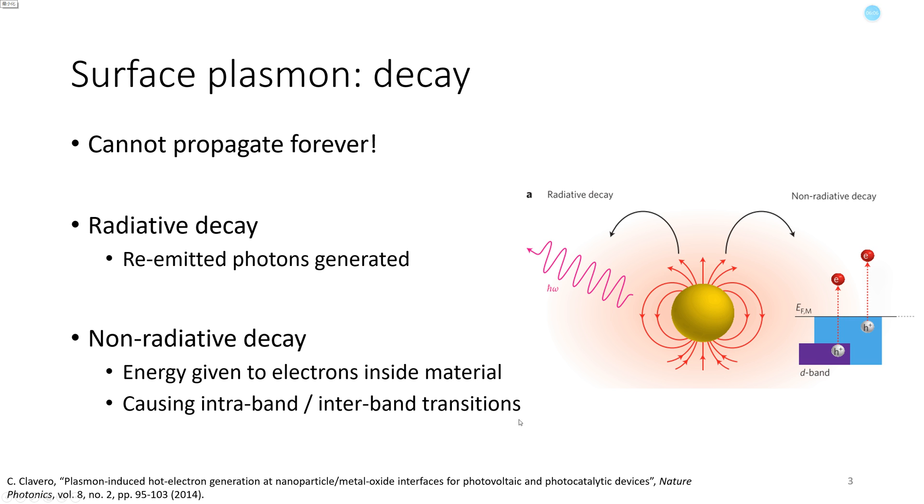One is radiative, which means that photons are regenerated and emitted. The second is non-radiative. Here the field gives its energy to electrons inside the material. Here we will mainly focus on non-radiative decay, since that's what we're going to make use of.